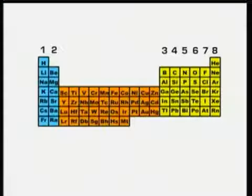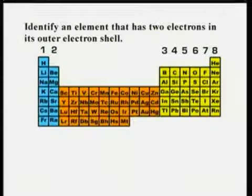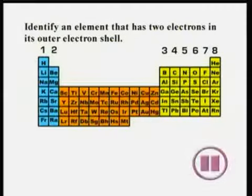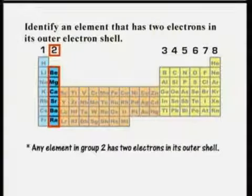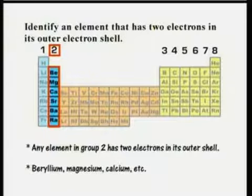Here are some questions about the periodic table. Identify an element in the periodic table that has two electrons in its outer shell. Any element in group 2 has two electrons in its outer shell, so you could have said beryllium, magnesium, calcium, etc.